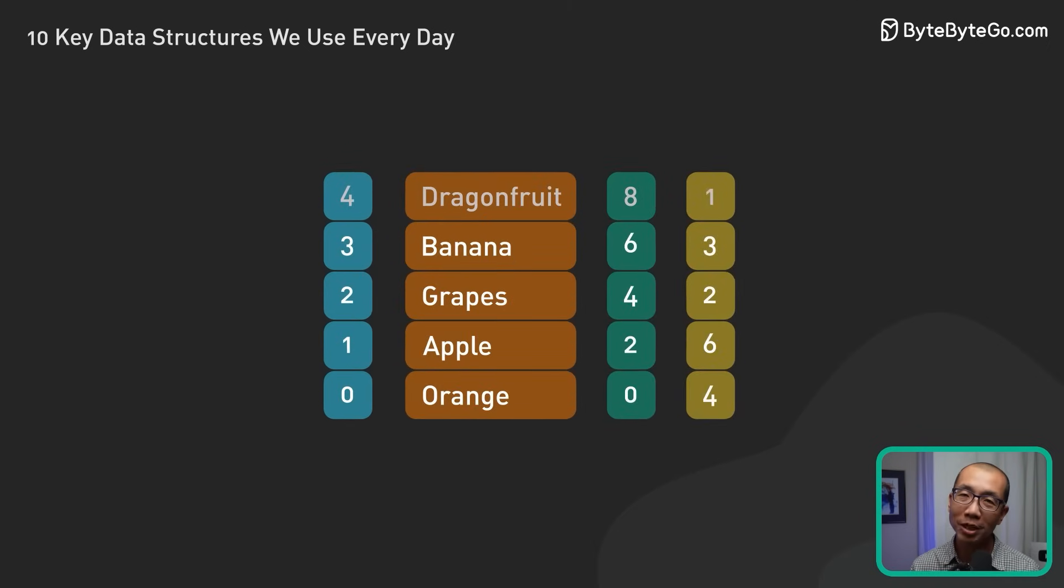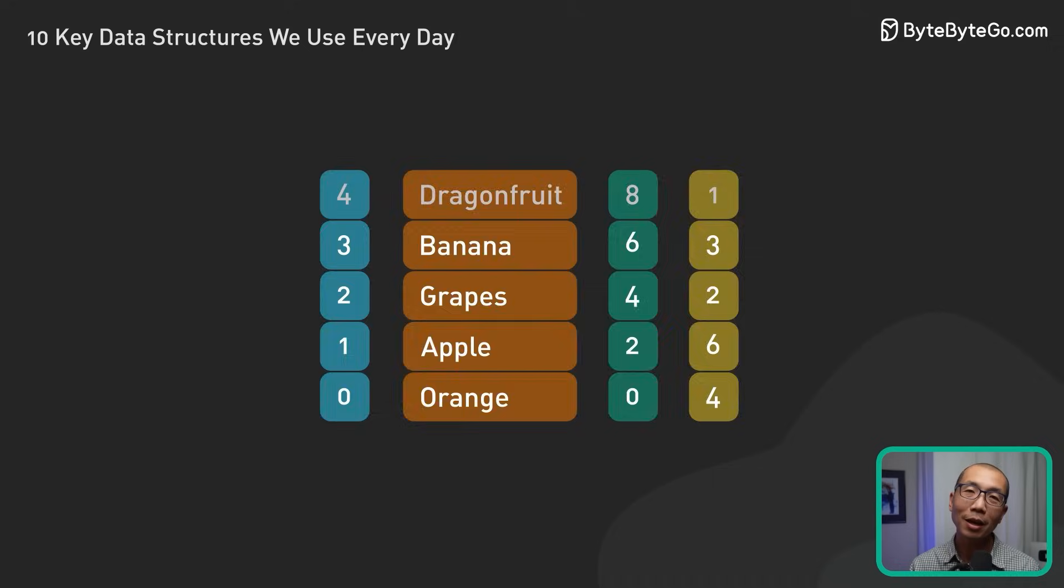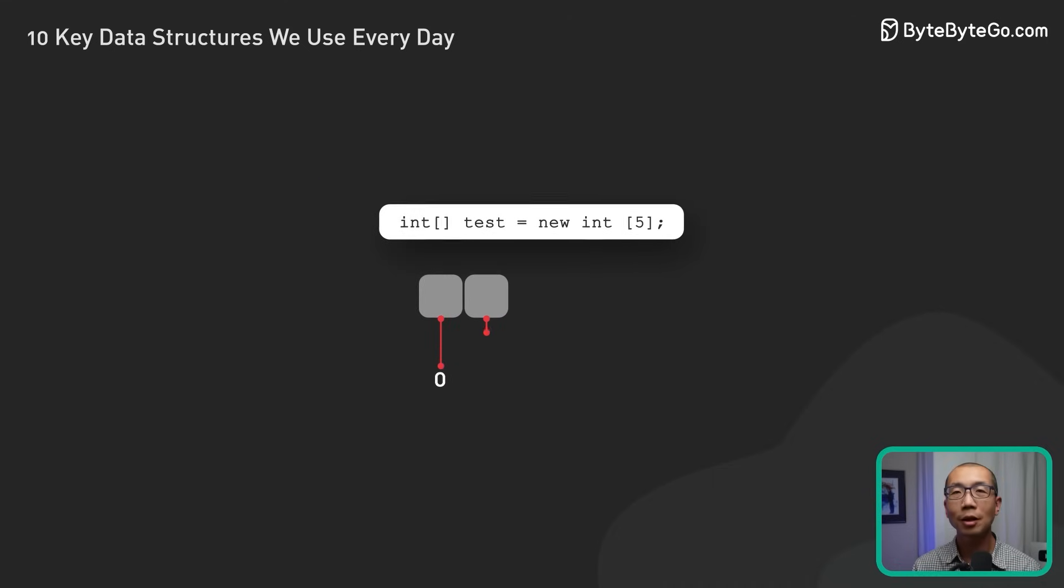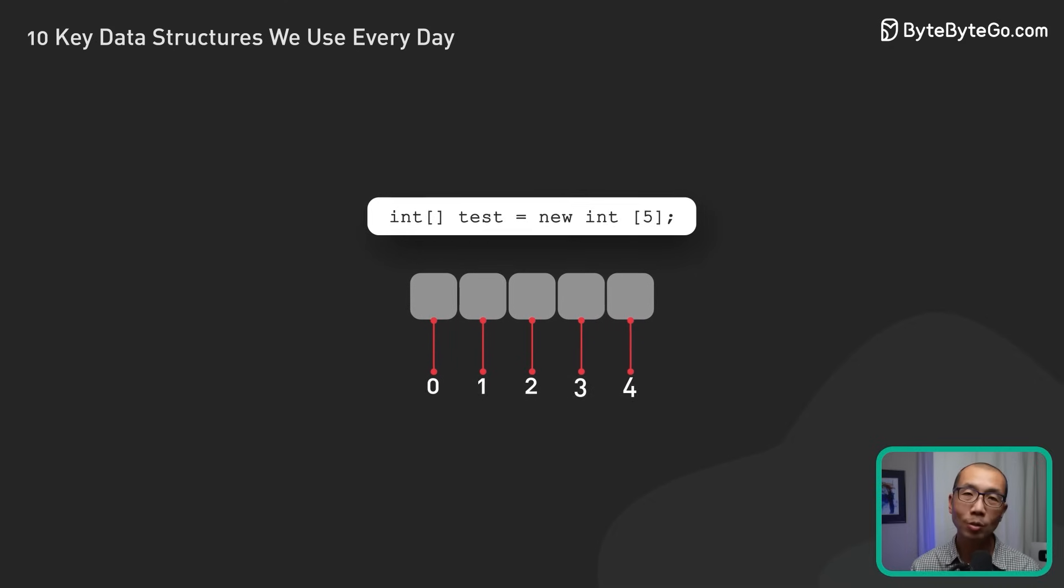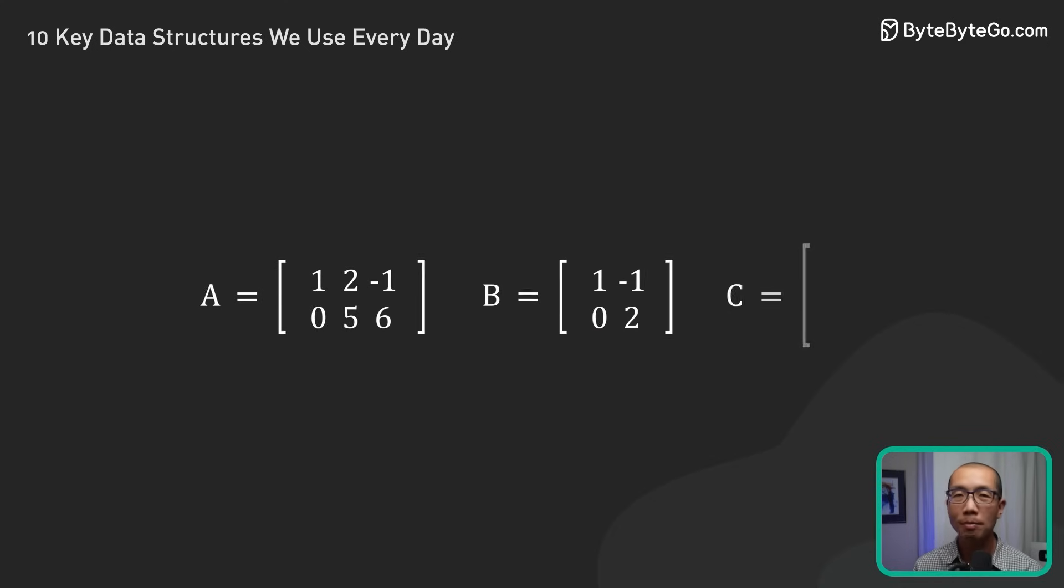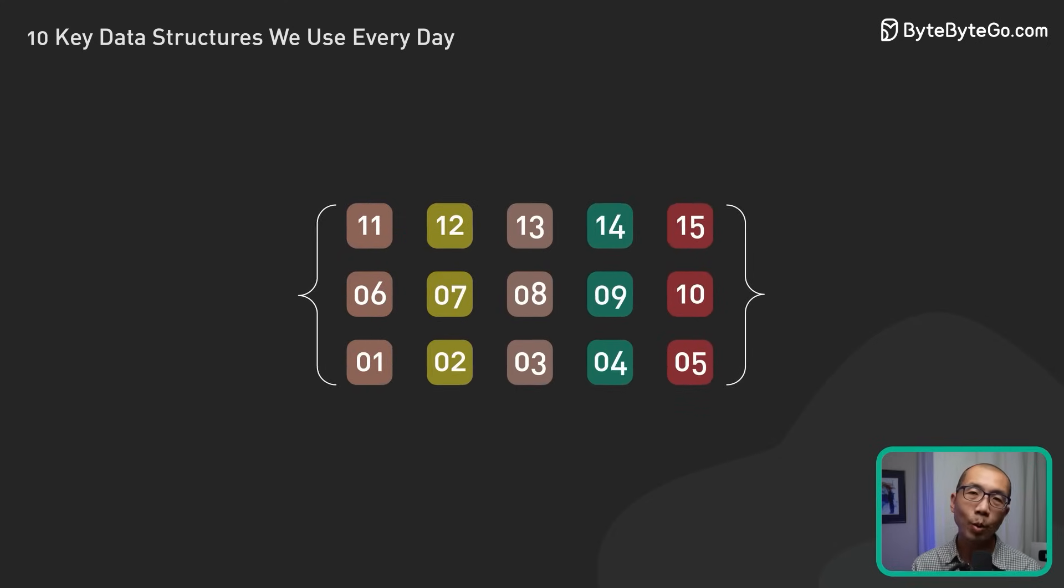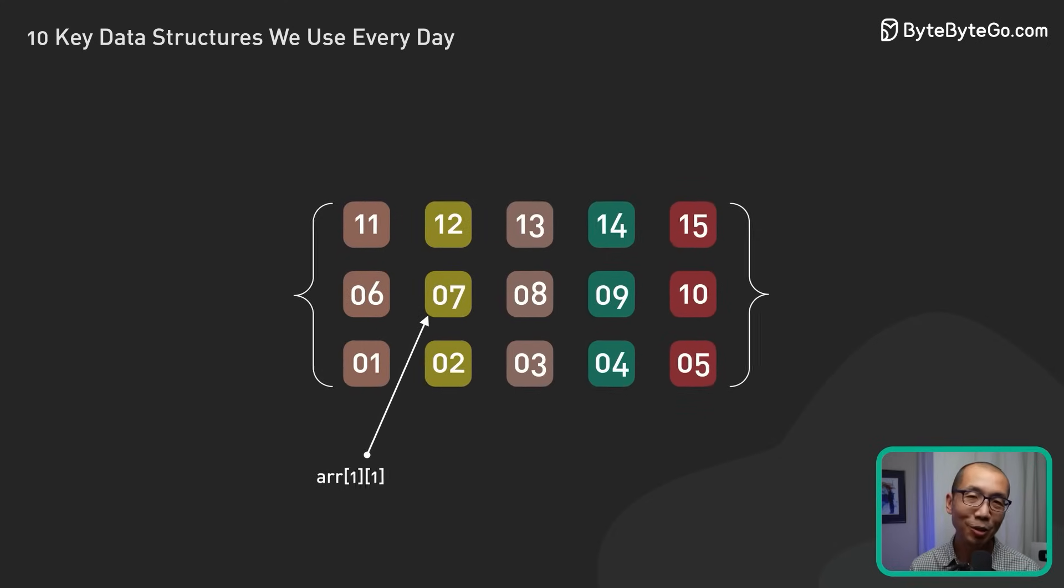Arrays are another fundamental data structure. They provide a fixed size ordered collection of elements. They are particularly well suited for situations where the size of the collection is known or doesn't change frequently. Arrays are commonly used in mathematical operations, storing large data sets, or when there is a need for random access to elements.